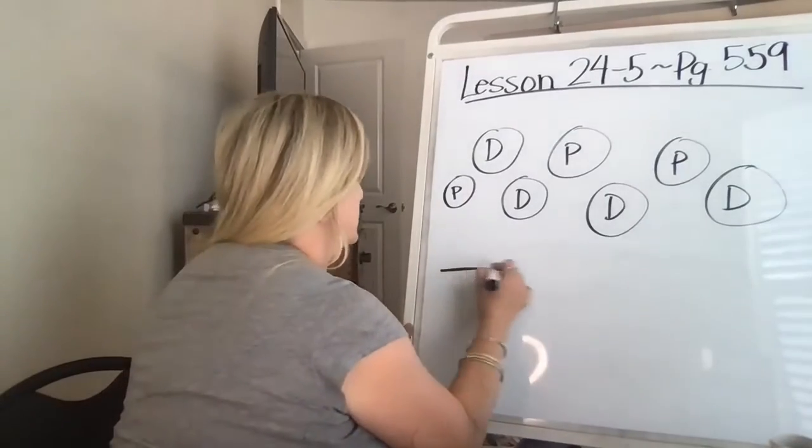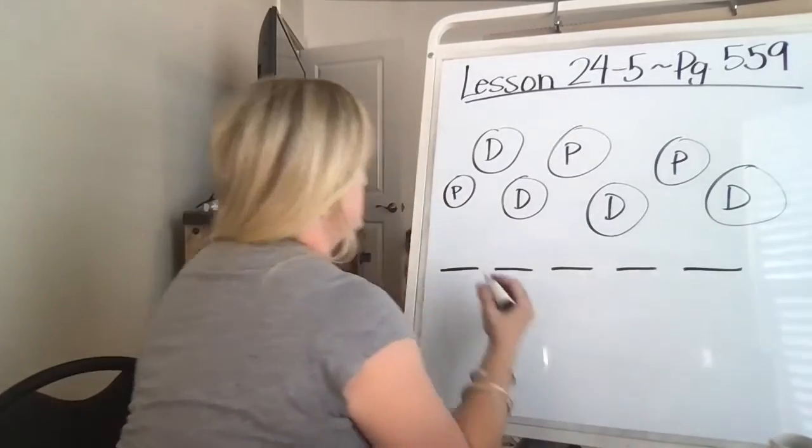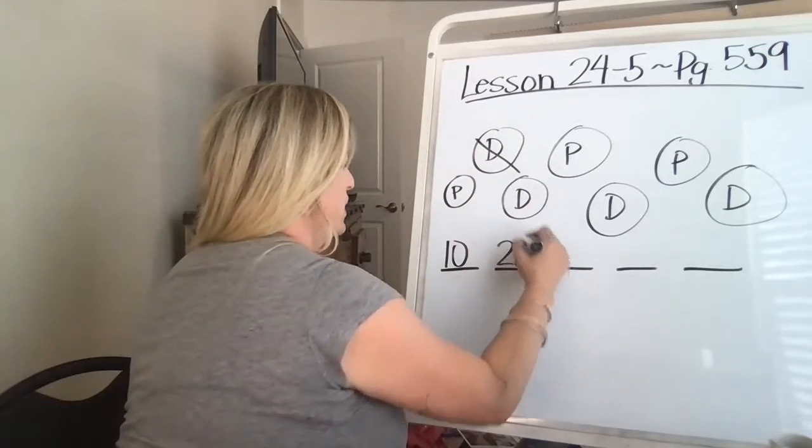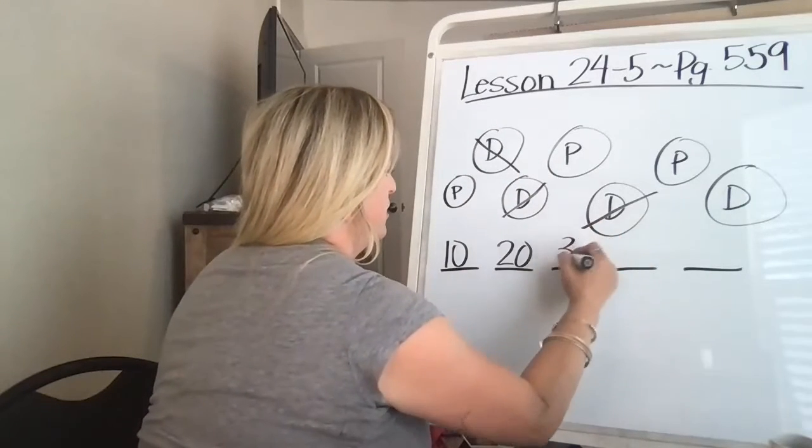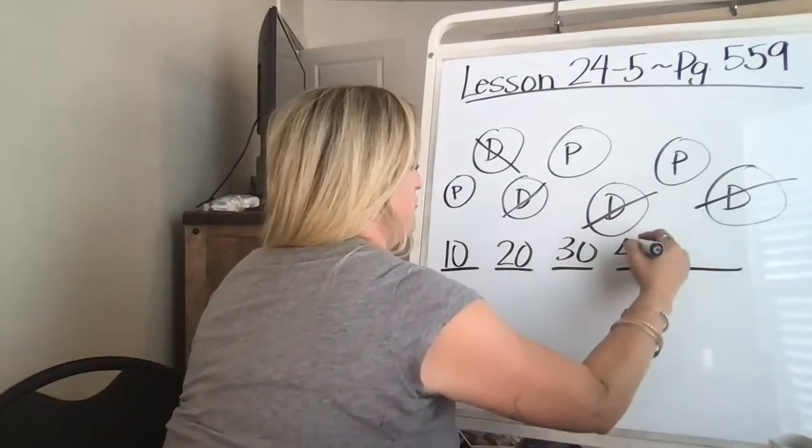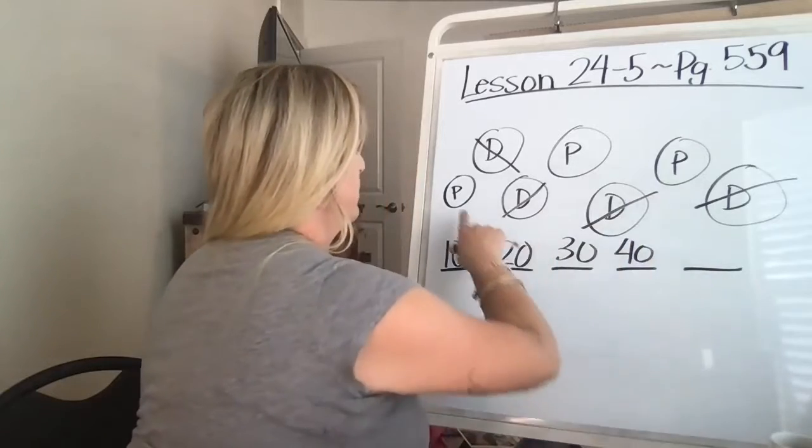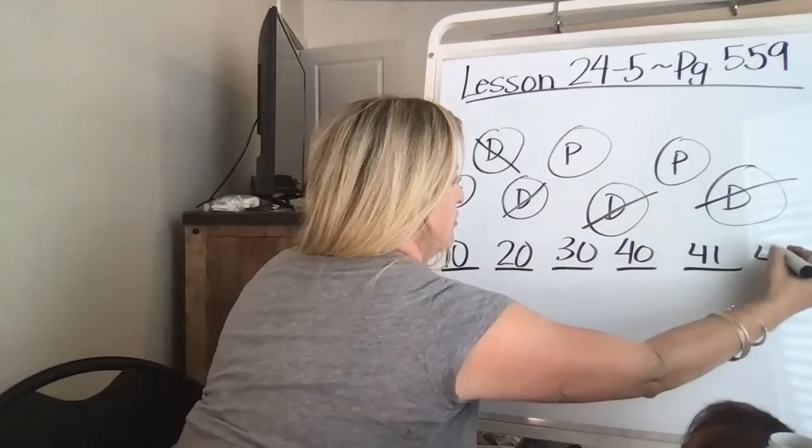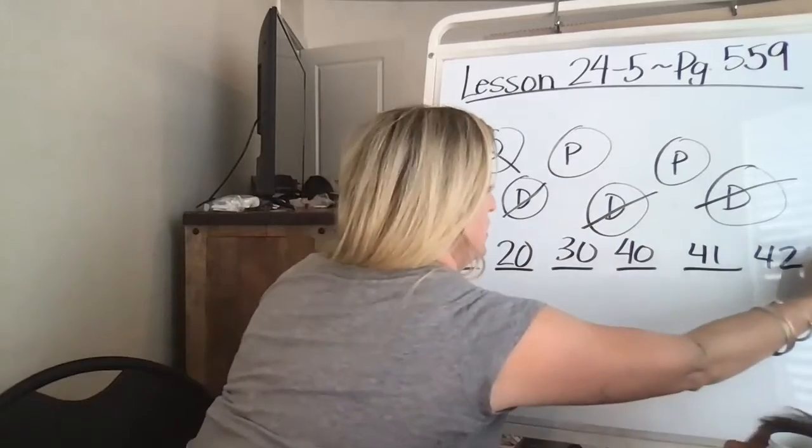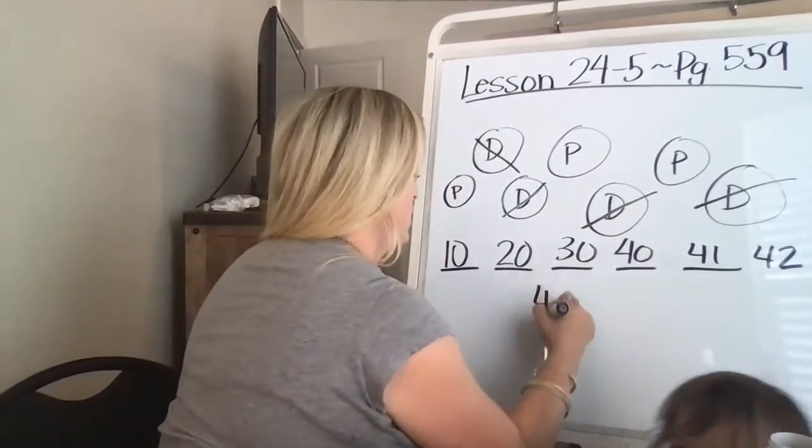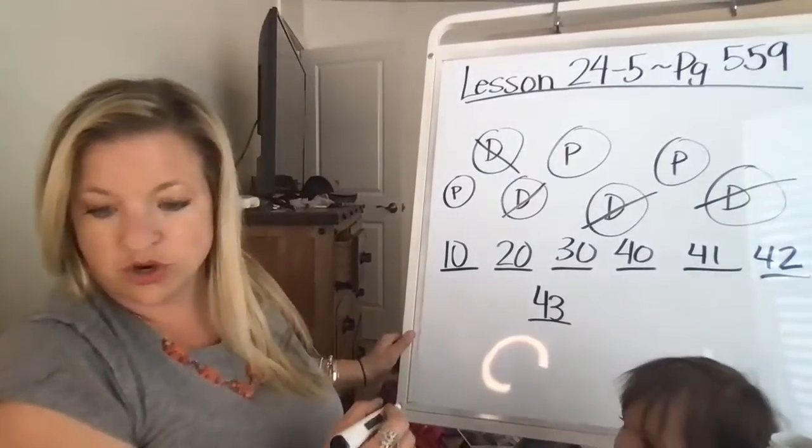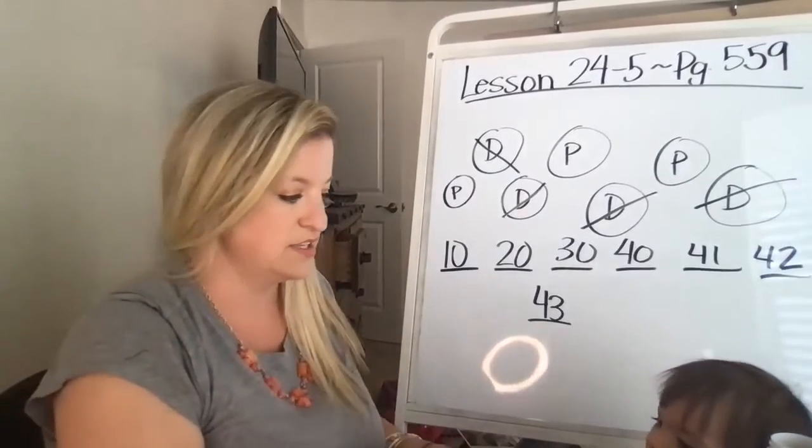So it doesn't tell you what the first one is because it starts with the biggest number. So we have dime, which is 10, dime, 20, dime, 30, dime, 40. Now we're going to count by ones. 41, 42, 43. And can you see that? No, 43. So the last one is 43. So you have 43 cents.